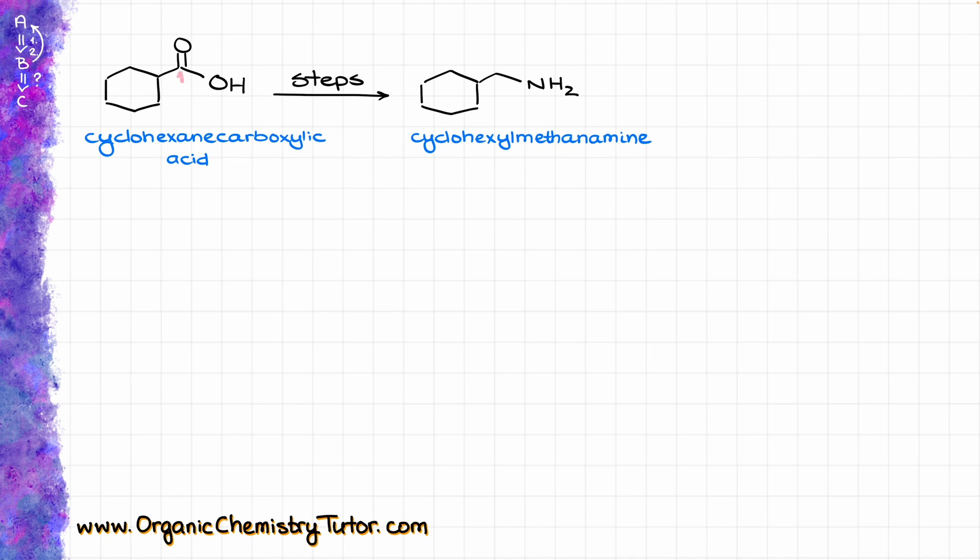So here I have 1, 2, 3, 4, 5, 6 and 7 carbons. And in my product I have 1, 2, 3, 4, 5, 6 and 7 carbons as well. So here we have the same number of carbons, which means that we are not going to be either adding or removing any carbons from our molecule.